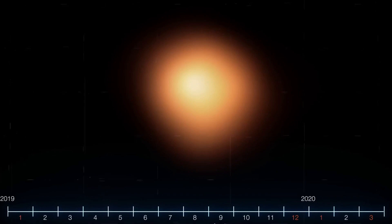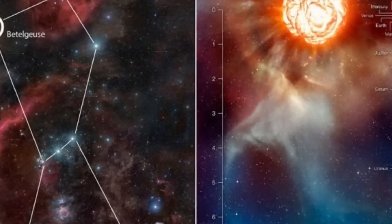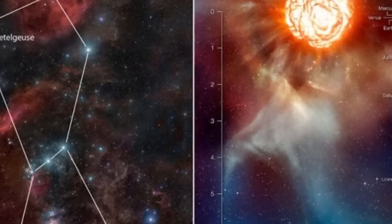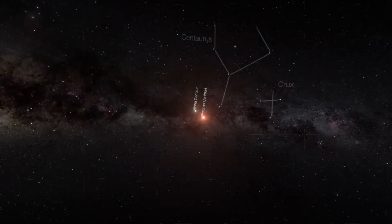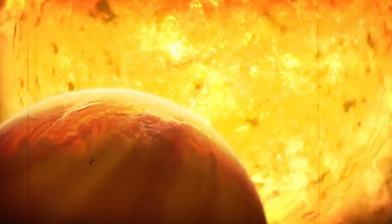One of the most anticipated astronomical events is the Betelgeuse supernova. Located on the famous shoulder of Orion, Betelgeuse is a red supergiant star nearing the conclusion of its life.